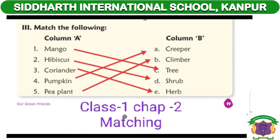There are two divisions. First is Column A on one side, and Column B on the other side.